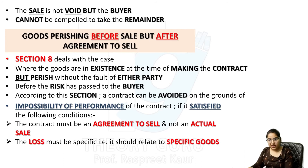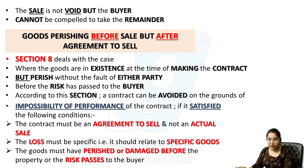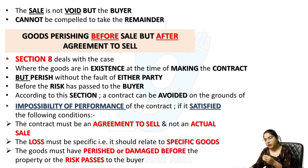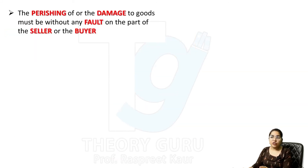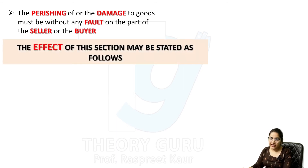तीसरी condition: the goods must have perished or been damaged before the property or the risk passes to the buyer — buyer के हाथ में product आने से पहले वो चीज़ perish या damage हो गई। चौथी: the perishing or damage must be without any fault on the part of the seller or the buyer — seller और buyer दोनों में से किसी की भी गलती नहीं होनी चाहिए। तब उस ground पर हम इस contract को avoid कर सकते हैं।